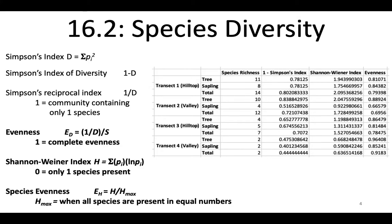Here are some other indices and values for measuring species diversity — again I won't have you calculate these on the exam, but I do want you to be able to interpret them. This is data that ecology students calculated the very first semester I taught ecology. Simpson's index D is just the sum of relative abundance squared. Simpson's index of diversity — one minus D — is used because it's more intuitive; low D numbers represent high diversity. There's also Simpson's reciprocal index, one divided by D, where a value of one equals a community containing only one species.